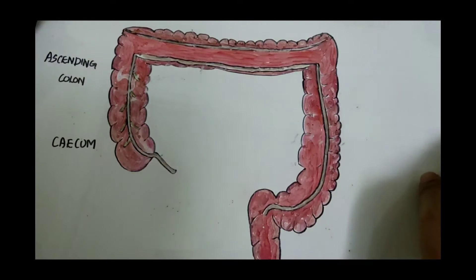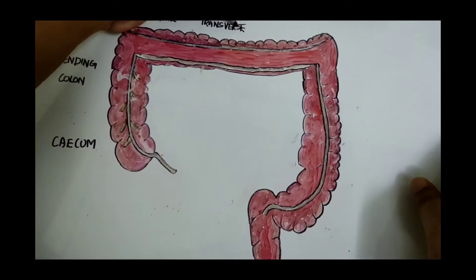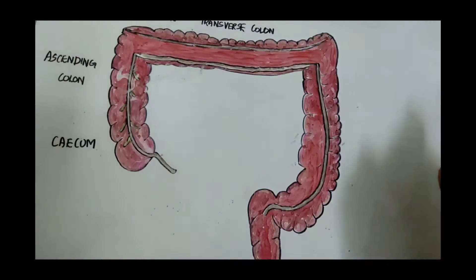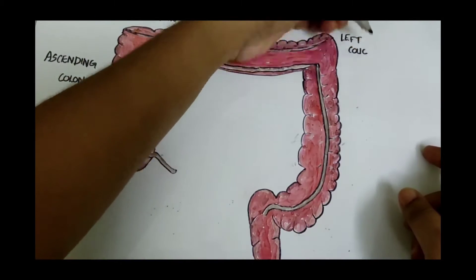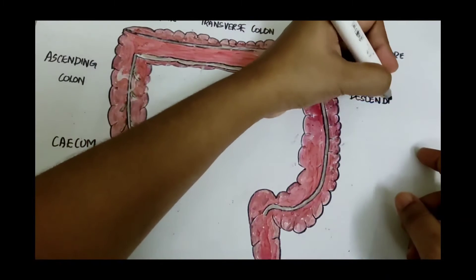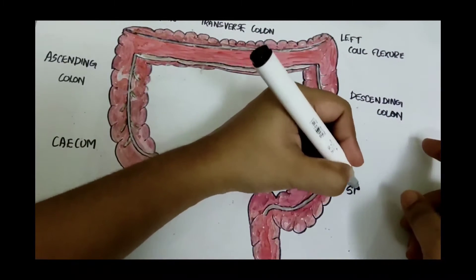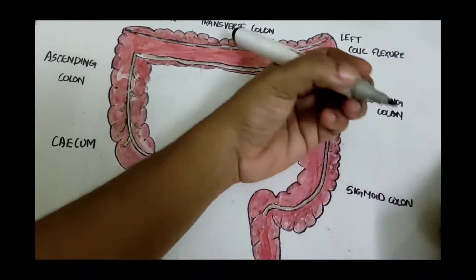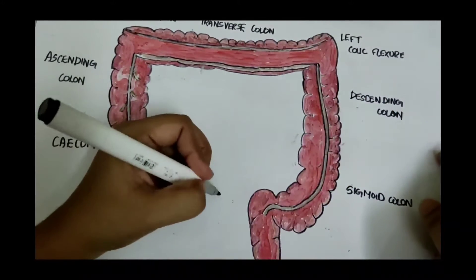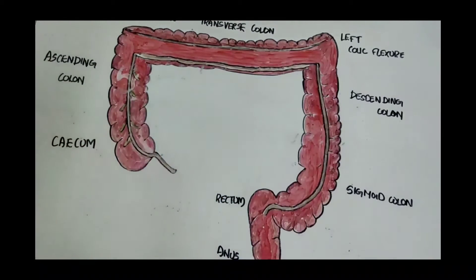The parts of the large intestine are: the cecum, the ascending colon, the right colic flexure, the transverse colon, the left colic flexure, the descending colon, the sigmoid colon, the rectum, and the anus.